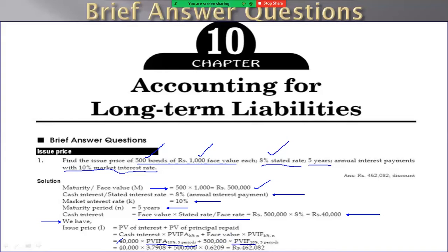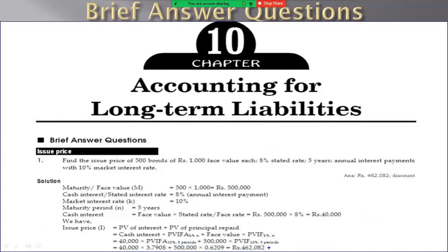The present value infinity factor table value at 10%, 5 years is 3.7908, and the PBIF value is 0.6209. So: 40,000 × 3.7908 plus 500,000 × 0.6209 gives approximately Rs.462,082 as the issue price.